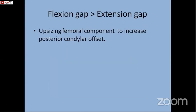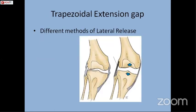If the flexion gap is more than the extension gap, then up-sizing of the femoral component will increase the posterior condylar offset to achieve a balanced flexion gap. The commonest situation in valgus is a trapezoidal extension gap with tightness on the lateral side and laxity on the medial side.